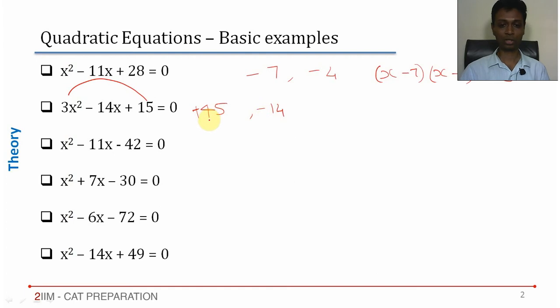Product is positive, so we should have either both positive or both negative. Since it's -14, both should be negative. We split this as -9 and -5.